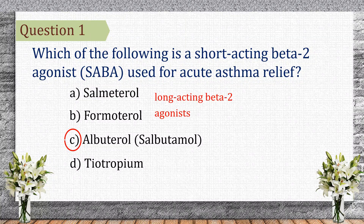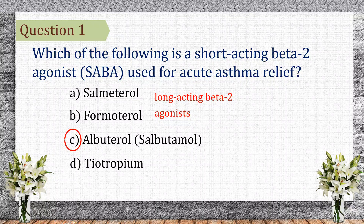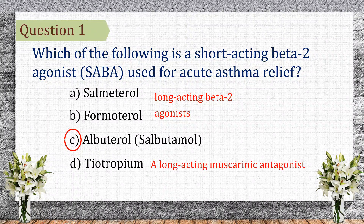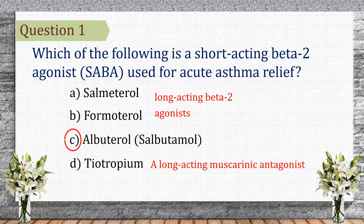Let's see the other options. Salmeterol and formoterol are long-acting beta-2 agonists, not used for acute relief. Tiotropium is a long-acting muscarinic antagonist, mainly used for COPD.